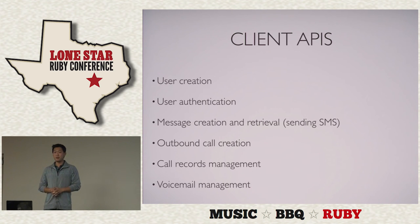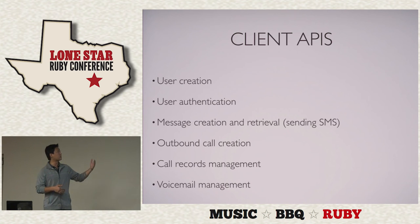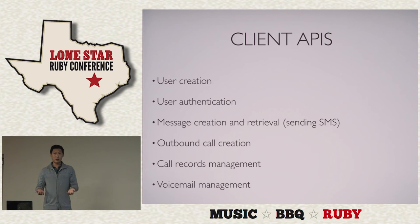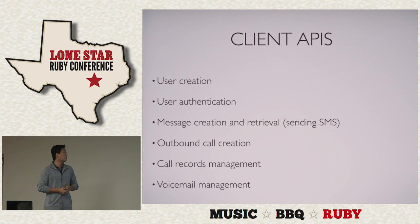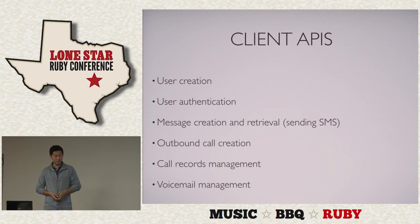I've been talking a lot about the server APIs, but the client APIs are very important too. The client API was built to support the Android demo app. The APIs are very straightforward: user creation, authentication (a user must authenticate before making calls or sending messages), send and retrieve messages, place outbound calls, manage call records (inbound, outbound, duration, etc.), and manage voicemail including visual voicemail transcription. It's a basic set of APIs written in Rails, so adding new APIs is pretty easy.